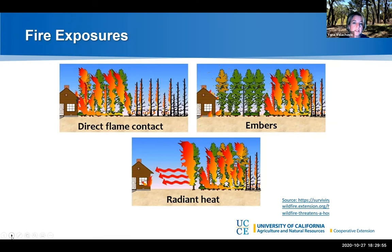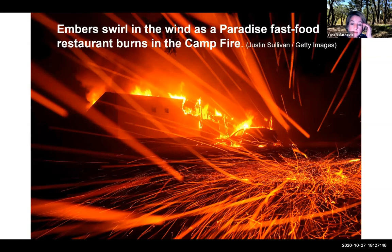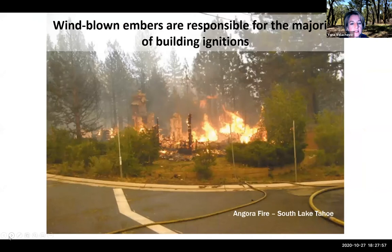Coming back to embers: embers are pervasive and they can get anywhere — they can find the nooks and crannies. My cabin was under evacuation as a result of the August Fire, and when I came back, my cabin did survive, but underneath my door into the front of my house was a whole pile of ash. I realized my weather stripping wasn't very good, and embers would have been able to get right inside my house.